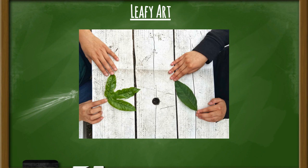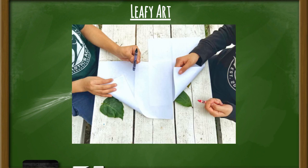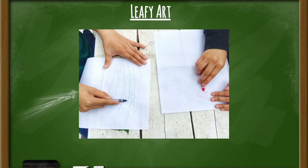After collecting your supplies, follow these steps: lay your leaves down flat on a table, place your piece of paper over the leaves and get your crayons ready, then press on your paper and use your crayon to go lightly over top of the leaves. A little bit of pressure is fine, but don't press too hard. When done, you'll have your Leafy Art design.